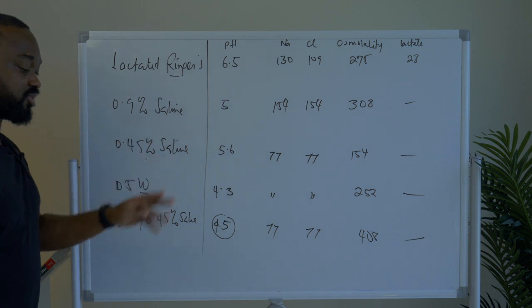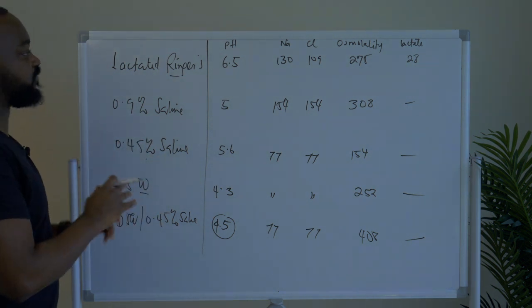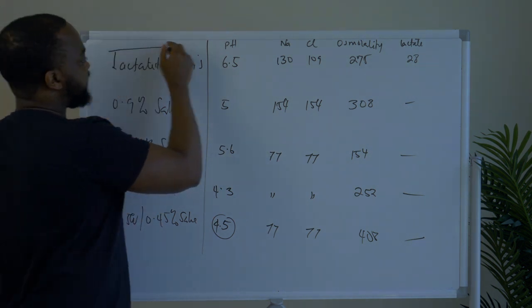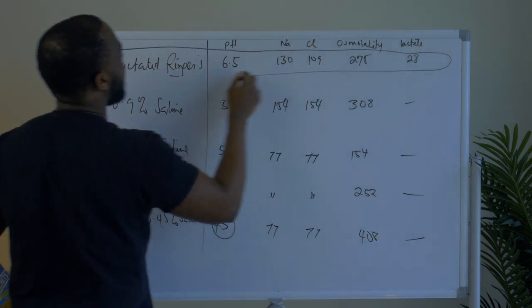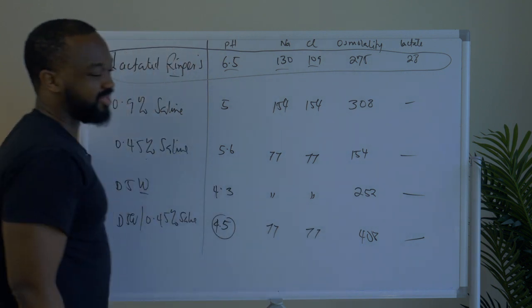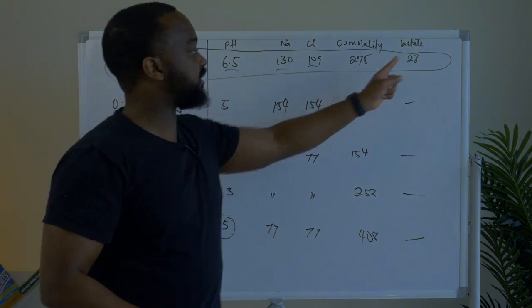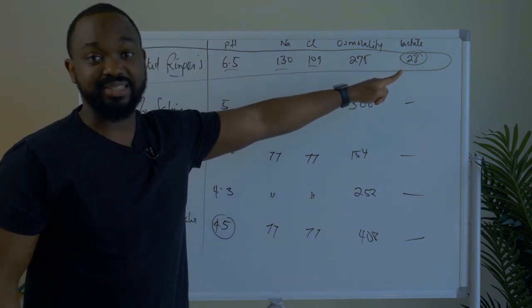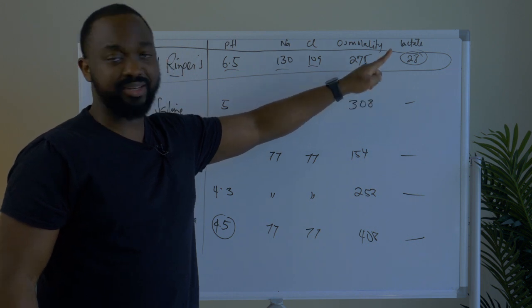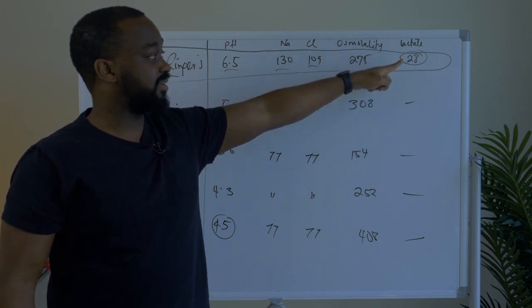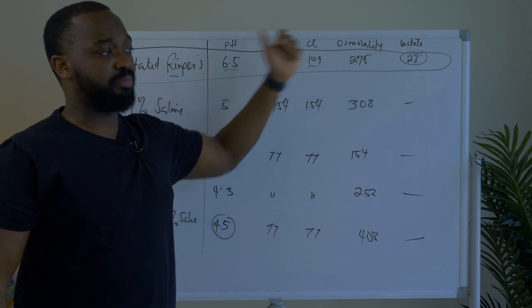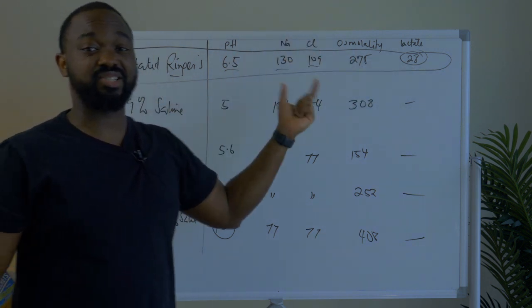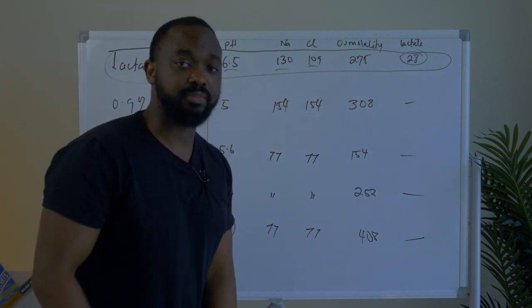Those are the main compositions of the IV fluids we use. The main point to take from the whiteboard is that lactated Ringer's has values most similar to normal serum values. In addition, it contains lactate — and remember, this lactate doesn't carry the hydrogen ion and won't worsen acidosis. The lactate in LR is actually a buffer that is eventually converted to bicarbonate.